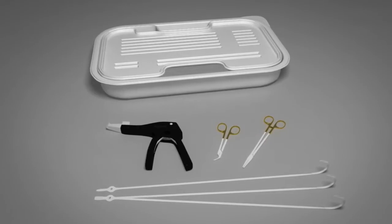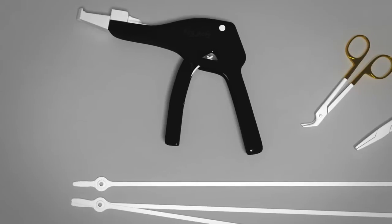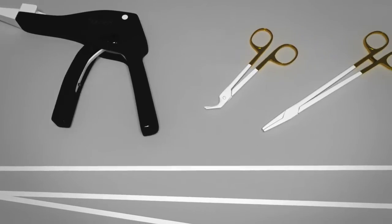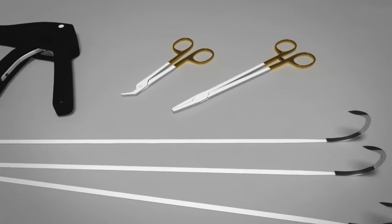The Figure 8 Sternal Closure System is revolutionary, simple, and provides a stronger and more stable construct that results in less cut-through than traditional steel wire cerclage.